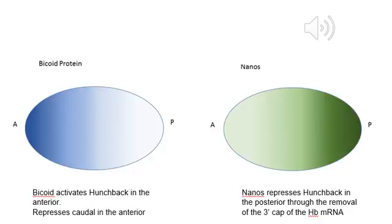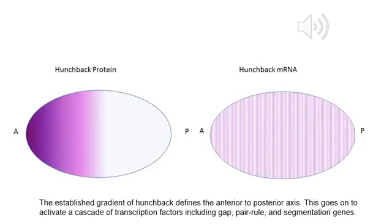Nanos mRNA is located in the posterior and diffuses anteriorly. Nanos represses hunchback in the posterior by removing the poly-A cap of the mRNA, which results in its degradation. Maternal hunchback mRNA is deposited evenly throughout the egg, but the combined effects of Nanos and Bicoid establish a hunchback protein gradient.